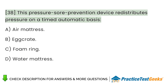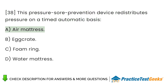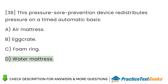This pressure sore prevention device redistributes pressure on a timed automatic basis: A. Air mattress. B. Egg crate. C. Foam ring. D. Water mattress.